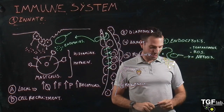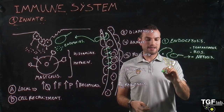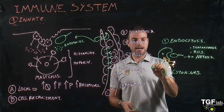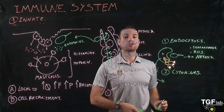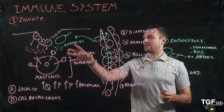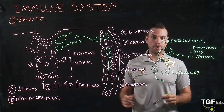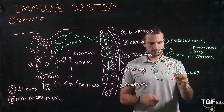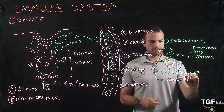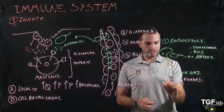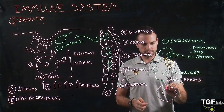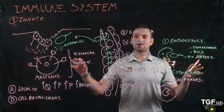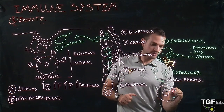Another thing these cells do is secrete a lot of cytokines. These cytokines recruit different immune cells to participate in the innate response. One of the first cells they recruit are the macrophages. The macrophages are also going to perform endocytosis — they are also going to engulf the bacteria and microorganisms present at the wound.